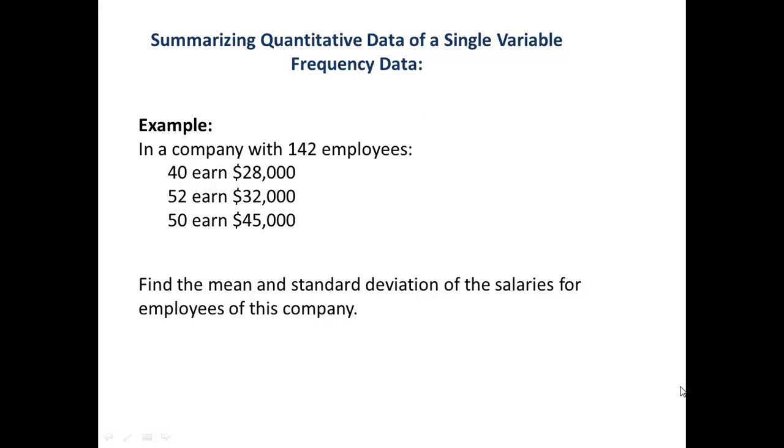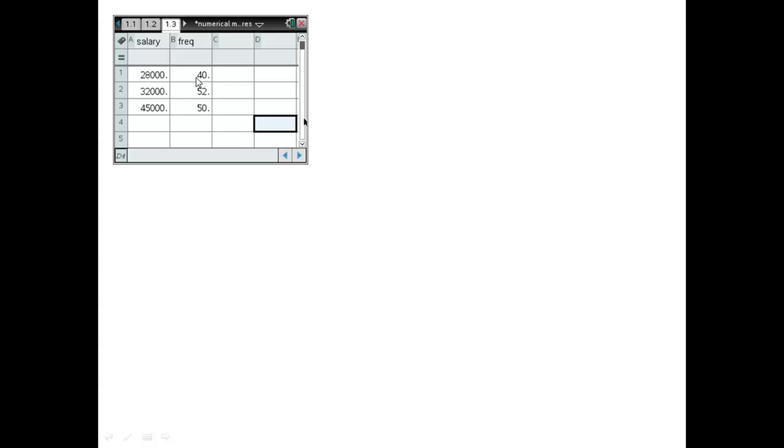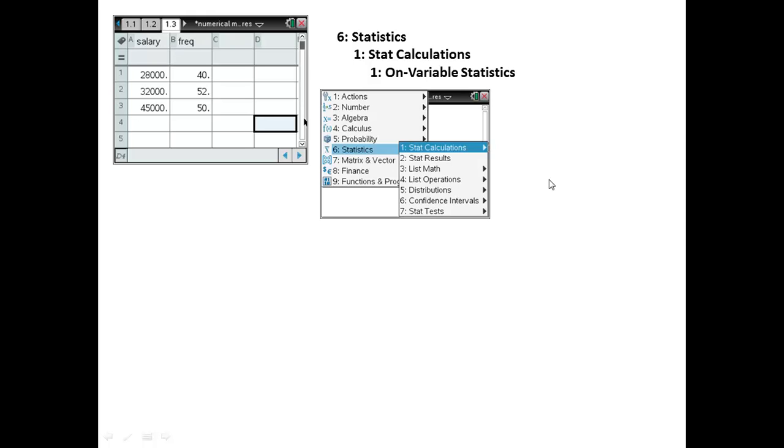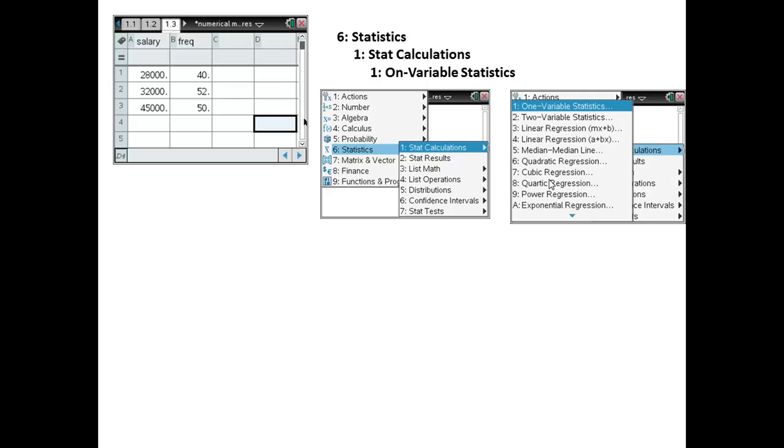Let's look at how to do that on the TI-Nspire. First, open a list and spreadsheet. Name your variable — here it's called 'salary' — and enter the three values the variable takes on: 28,000, 32,000, and 45,000. In another column, put their corresponding frequencies, and name that list. Then hit the menu key, go to number 6 (Statistics), then number 1 (Stat Calculations), then number 1 (One-Variable Statistics).